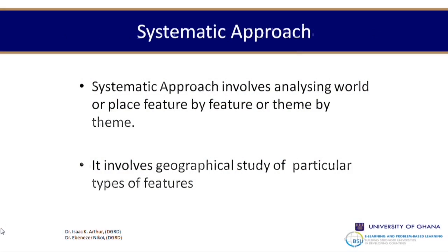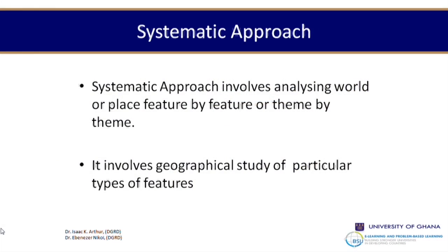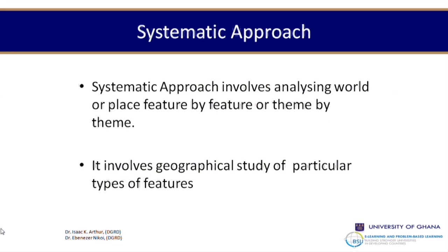For the systematic approach, it involves analyzing the world or place feature by feature or theme by theme. For example, if you want to study population, you look at different features — the population of males, females, or the age distribution of a particular population. You take the different characteristics of the population and study each one. It involves the geographical study of particular types of features, such as how many men are living in the north of Ghana, how many women are living in the east.